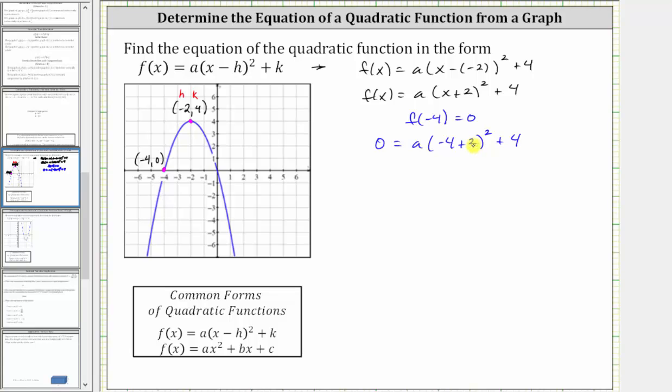And now simplifying, negative four plus two is negative two. The square of negative two is positive four, and positive four times a is four a, giving us 0 = 4a + 4. And now to solve for a, we subtract four on both sides, which gives us -4 = 4a, and then we divide both sides by four. Simplifying, we have a equals negative one.